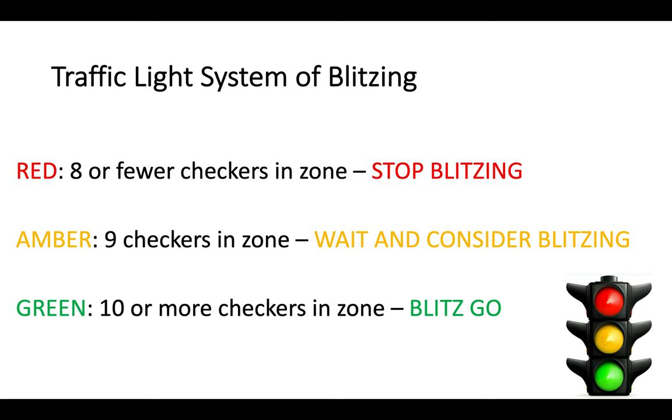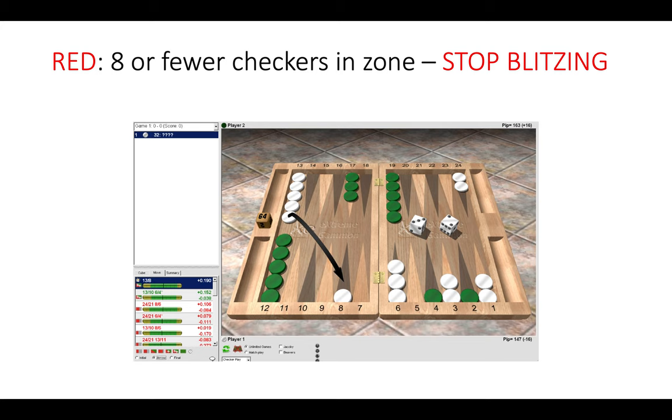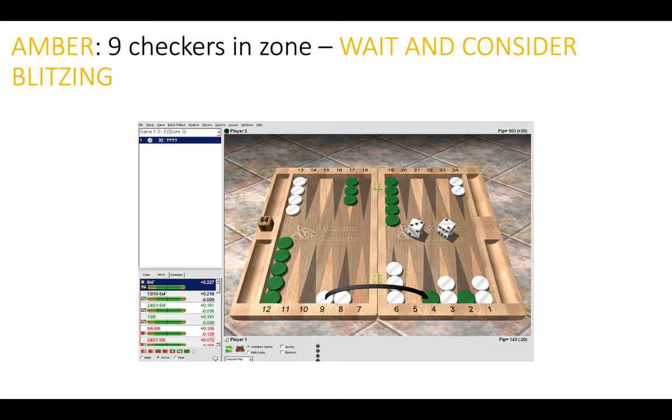So we're going to look at some positions to illustrate this concept further. Here we can see that white has rolled a double five, green has rolled the checkers back onto the board. Now white has eight checkers here in the zone, he has seven in his home board and one on the eight point, and then he's rolled a three two. It gives him two options, whether to play safe 13 to 8 or whether to hit. In this case we go to red and see that we have eight checkers and should stop the blitz. So it's simply better to not hit and play 13 to 8.